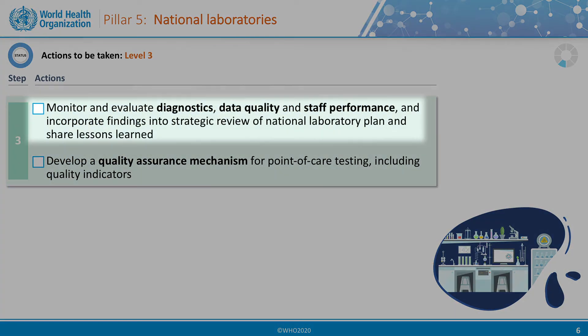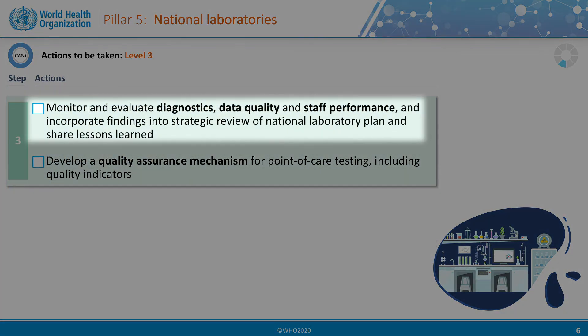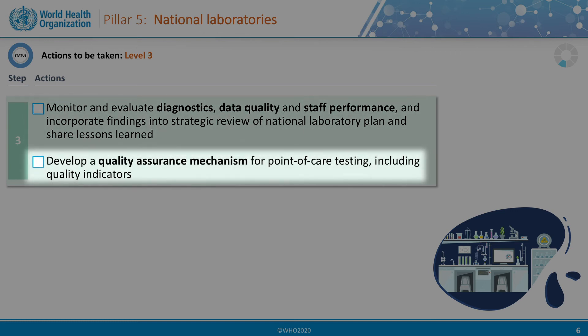Third level actions include monitoring and evaluating diagnostics, data quality, and staff performance. The findings should be incorporated into a strategic review of the National Laboratory Plan, and we should share our lessons learned. Lastly, we advise countries to develop quality assurance mechanisms for the testing they perform — for example, proficiency testing or external quality assurance for polymerase chain reaction (PCR).